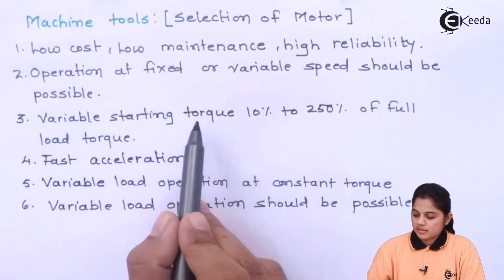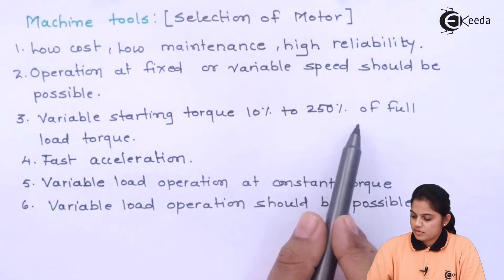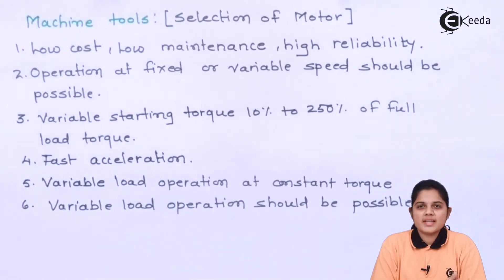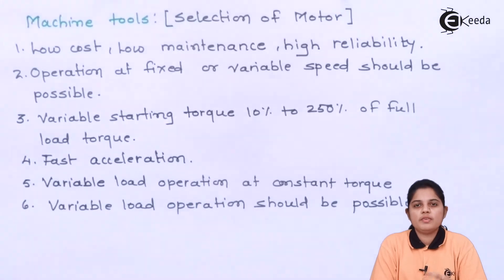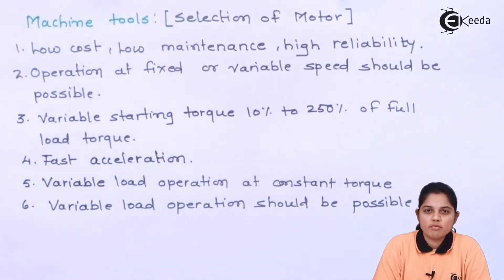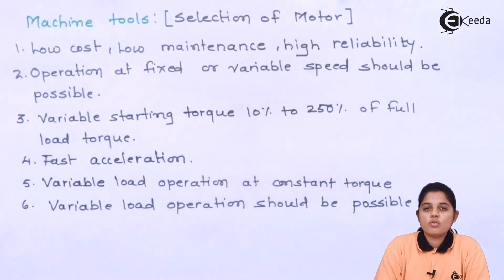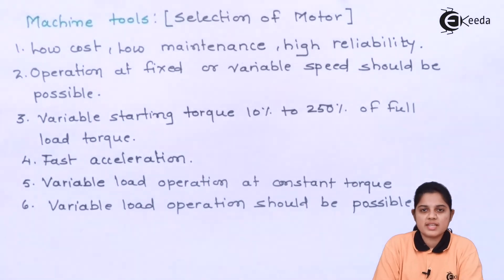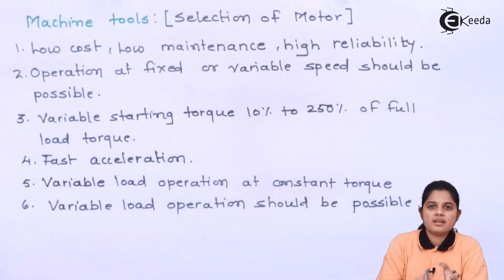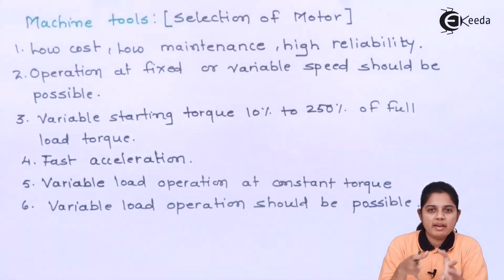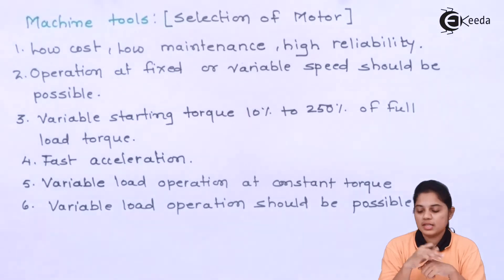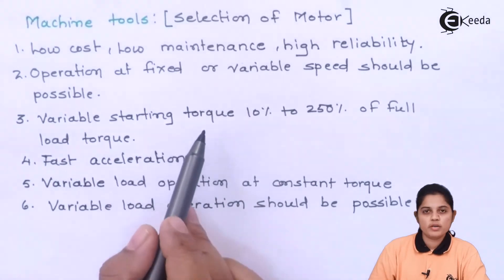Variable starting torque — that is 10% to 250% of full load torque. Torque will vary according to speed. As the supply voltage is given, torque is developed at the armature winding, and the torque produced at the shaft can be controlled. So, what is the torque when you start the motor? What is it at the initial stage, at the medium stage, and when the motor is shutting down? This is a very important variable to be noted.